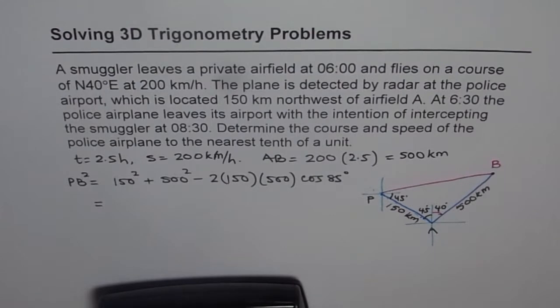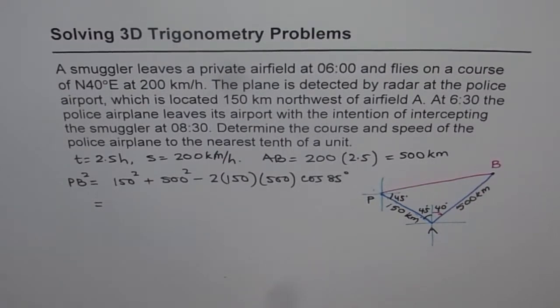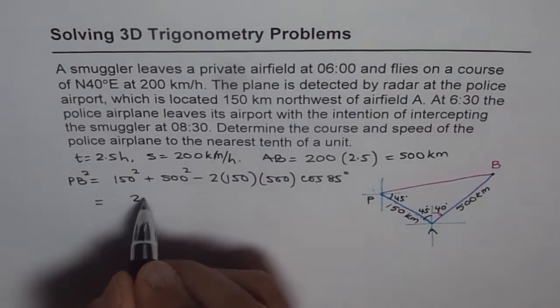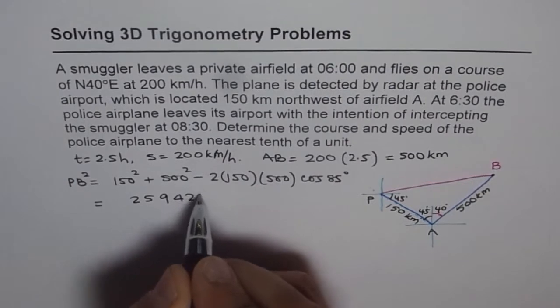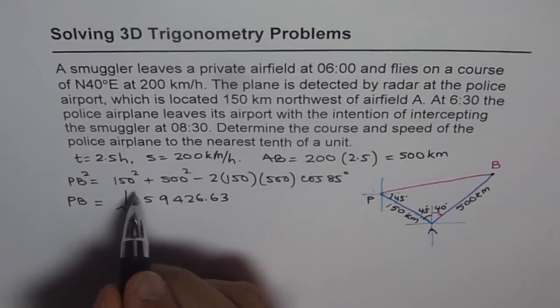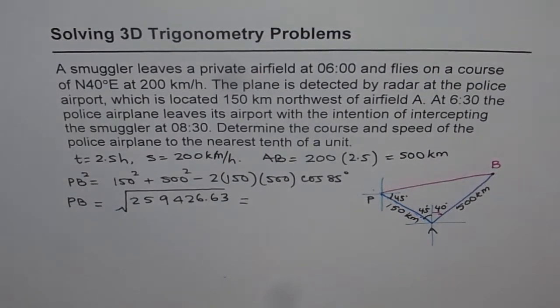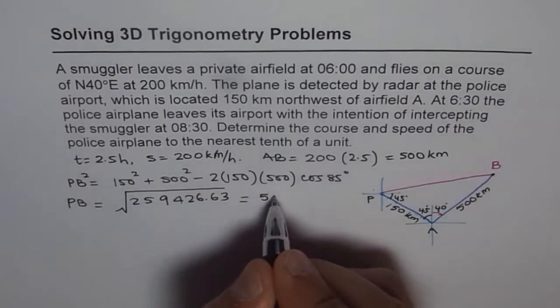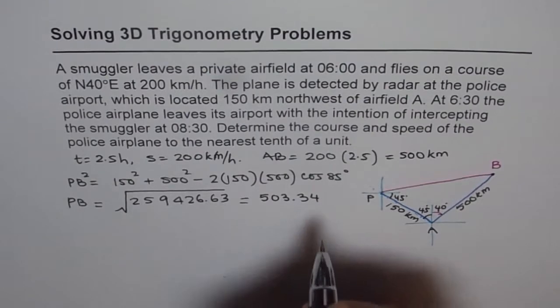So let's use the calculator to calculate this distance. So it is 150 square plus 500 square minus 2 times 150 times 500 times cos 85 degrees. That gives us 259,426.63. So PB will be the square root of that, and we get the distance as 509.34 kilometers.